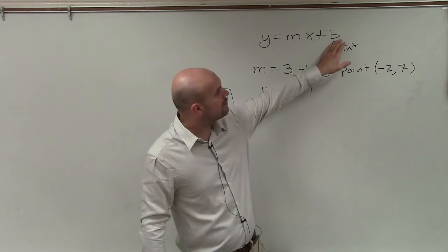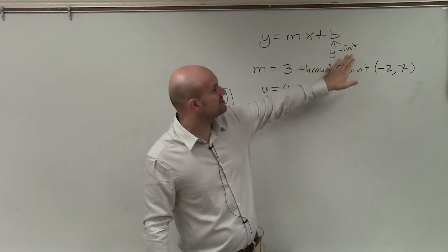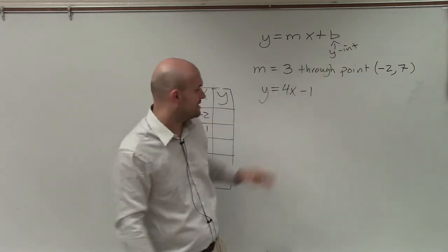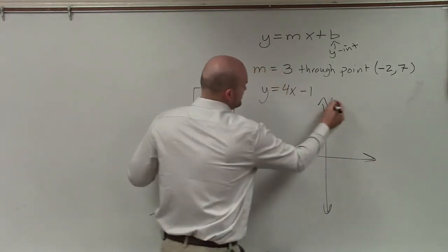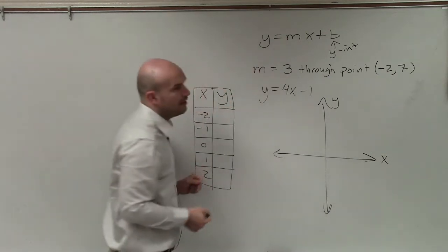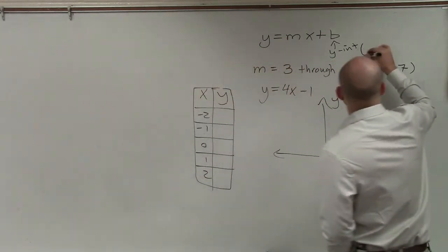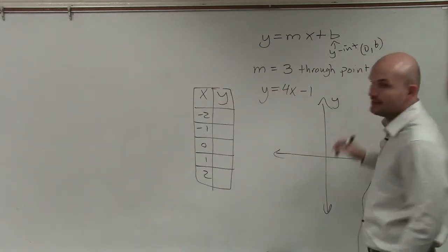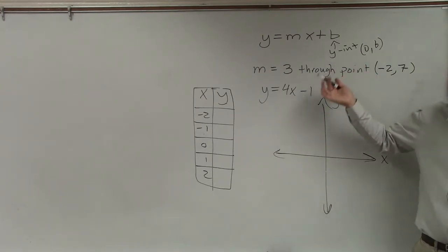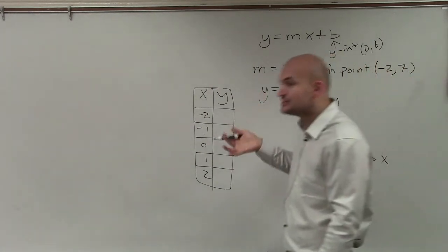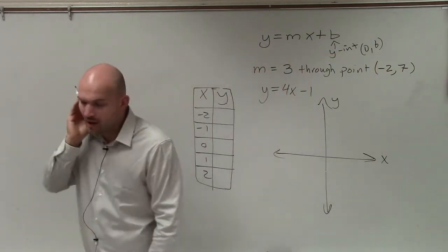So the letter b, whatever that value is, is going to represent our y-intercept. That is going to be where the graph is going to cross the y-axis. And that has a coordinate point of 0, comma b, meaning the x value is 0, meaning that point is going to lie on the y-axis, hence why we call it the y-intercept, where the graph intercepts the y-axis.